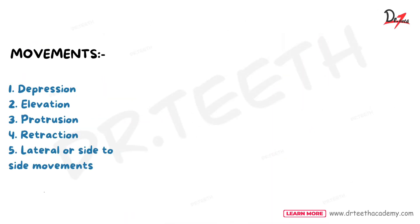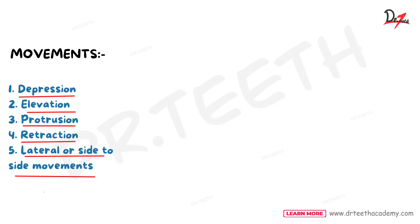Now let's discuss the movements of the temporomandibular joint. Its movements include depression, which is opening of the mouth; elevation, which means closing of the mouth; protrusion, which is protraction of the chin; and lateral or side-to-side movement during chewing or grinding.